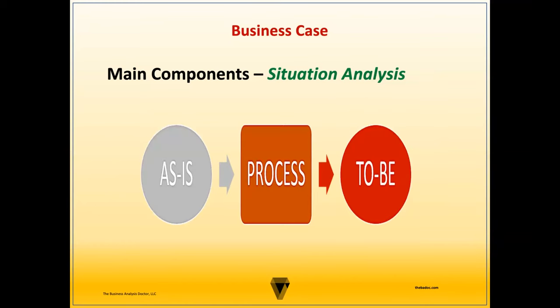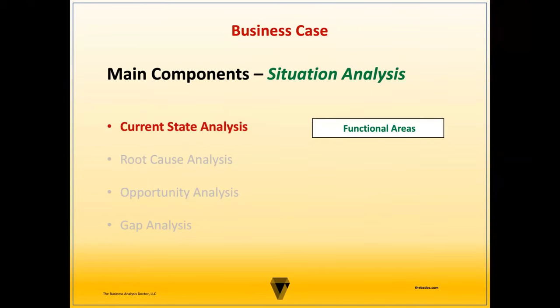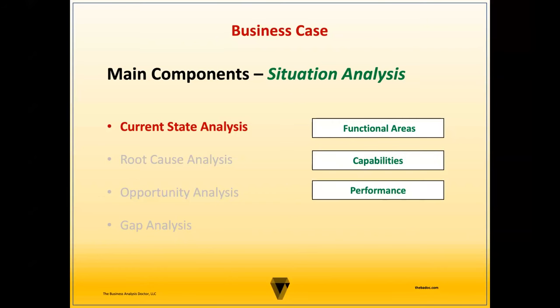Next is the situation analysis section. This is a representation of the current state or situation. Here, the business case describes the impacted functional areas for the initiative, the existing capabilities, the current performance, and the impacted stakeholders.